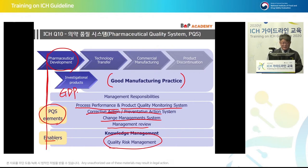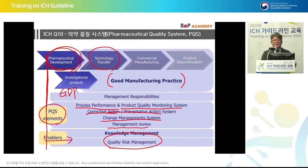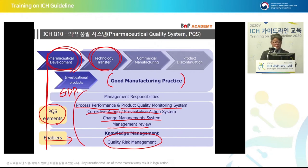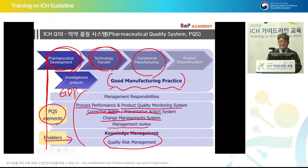Quality risk management needs to be started from the development phase. Once development is over, technology is transferred — within the same company from R&D to manufacturing, or between different companies. At that stage, all these elements need to be applied. The next step is commercial manufacturing, where GMP must be applied and PQS needs to be implemented.